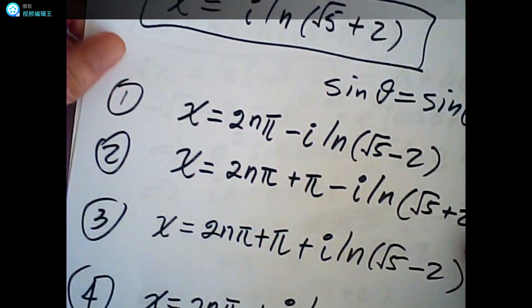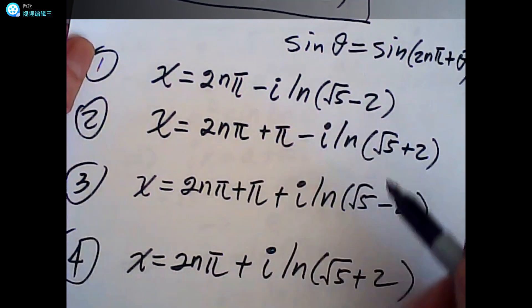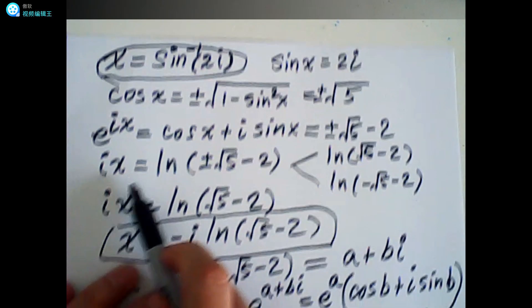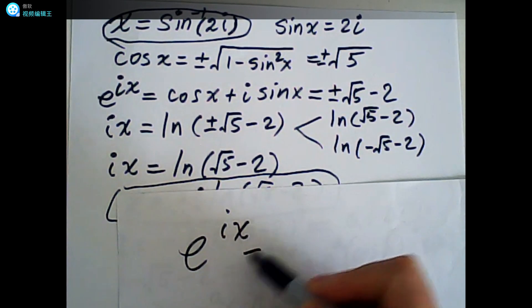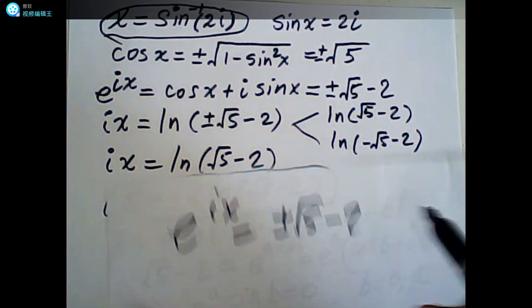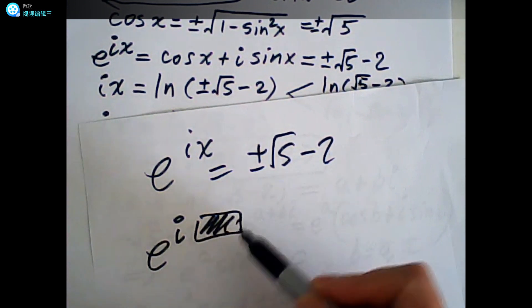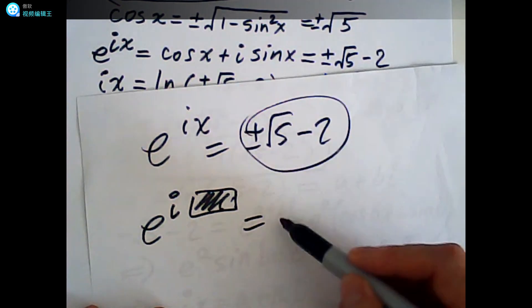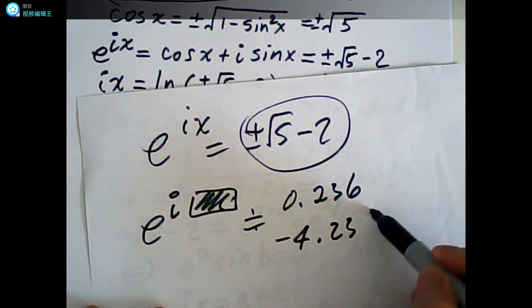This is a very nice question and a very nice method. You can verify the result. We verify by checking that e to the ix equals plus or minus √5 minus 2. We substitute our solution for x and calculate using a calculator. The value is approximately 0.236, or for the negative case approximately 4.236. That is how we can check whether our answer is correct.